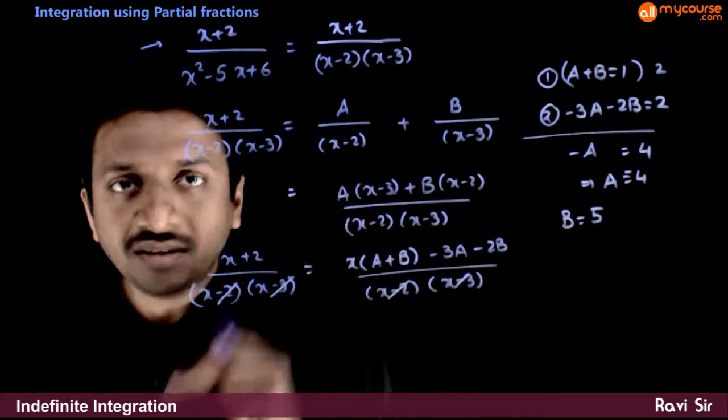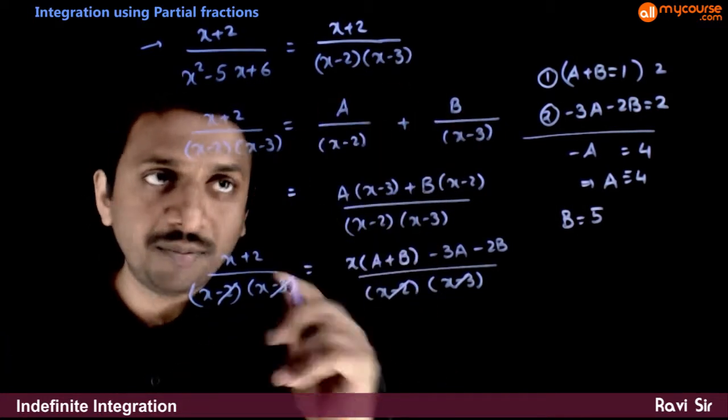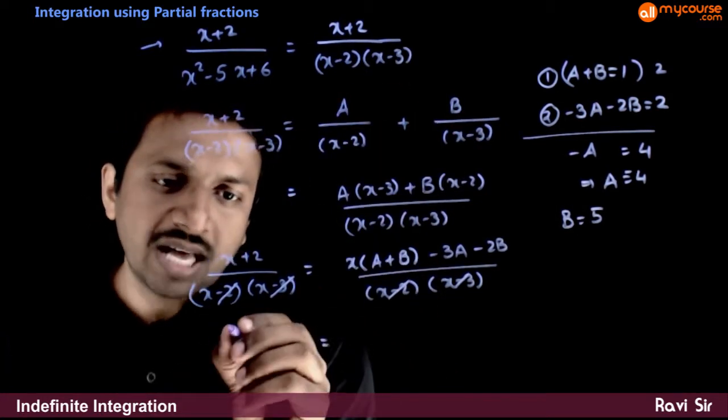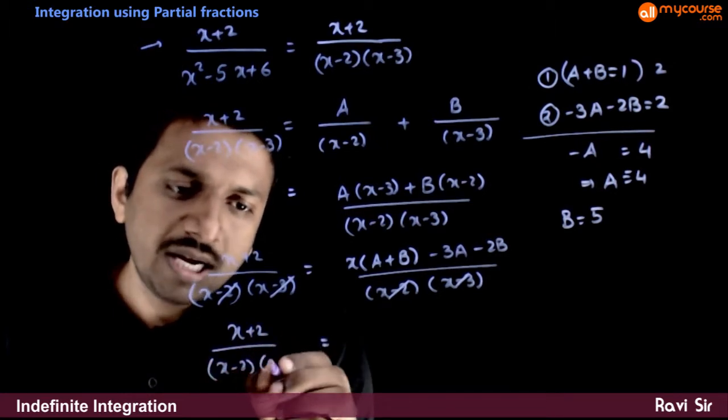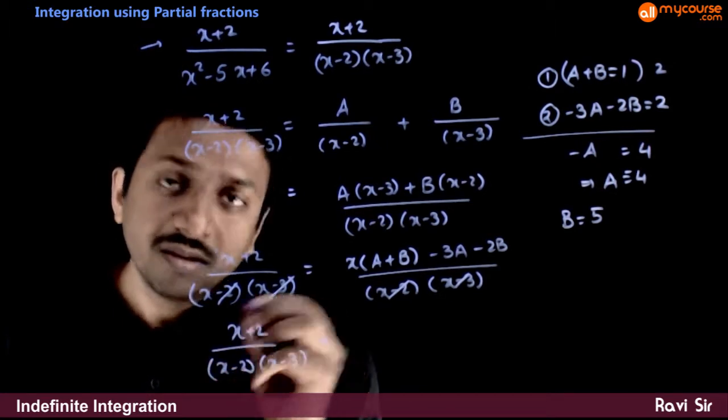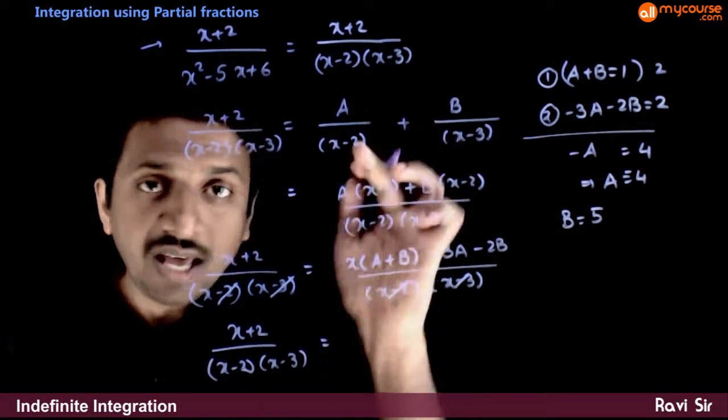If you substitute a and b in the place of a and b, the partial fractions are - that is x plus 2 by x minus 2 into x minus 3 is equal to a by x minus 2 plus b by x minus 3.